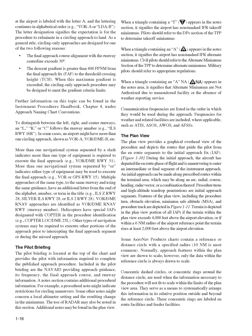Other types of navigation systems may be required to execute other portions of the approach prior to intercepting the final approach segment or during the missed approach. The Pilot Briefing is located at the top of the chart and provides the pilot with information required to complete the published approach procedure. Included in the pilot briefing are the NAVAID providing approach guidance, its frequency, the final approach course, and runway information. A notes section contains additional procedural information. For example, a procedural note might indicate restrictions for circling maneuvers, a local altimeter setting and the resulting change in minimums, or the use of radar.